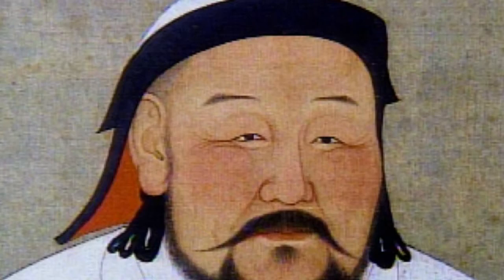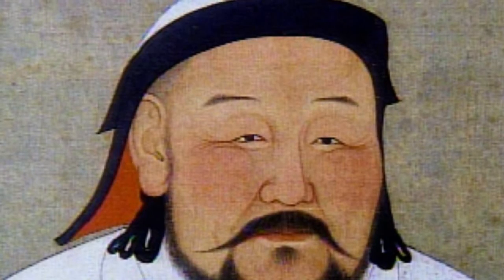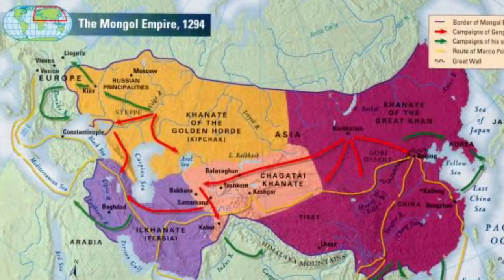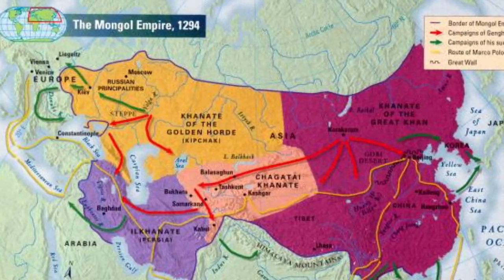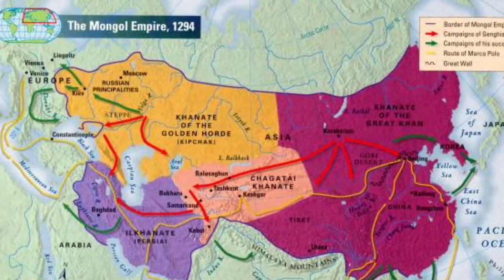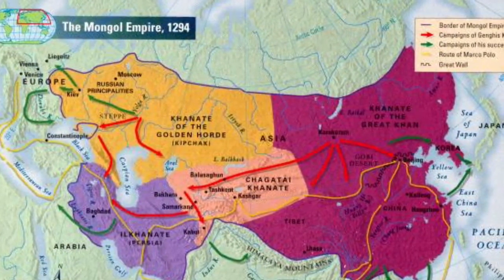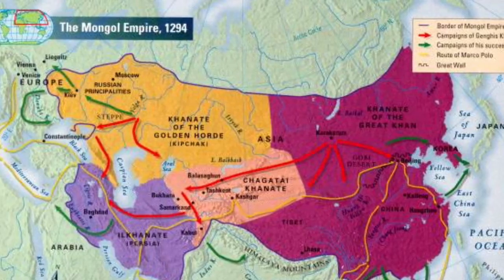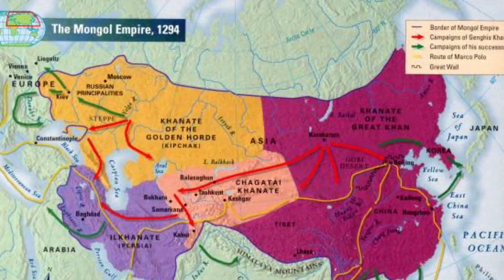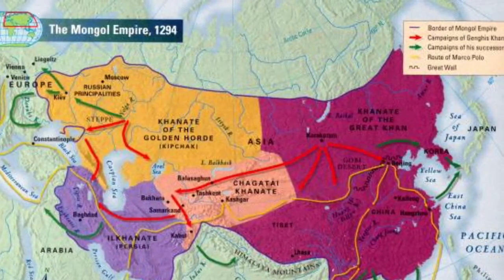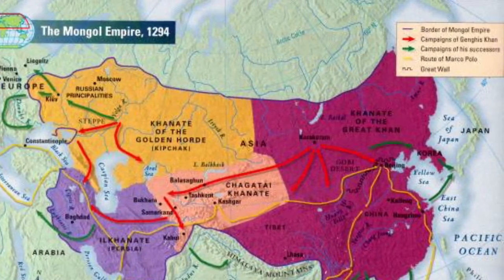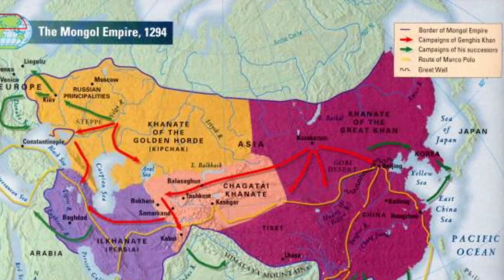The Mongol court returned to its native land. However, centuries of internal conflict, expansion, and contraction brought them to fall under the Manchu Qing dynasty. For the next 200 years, Mongolia was ruled by the Qing dynasty. Finally, Mongolia declared its independence in 1911 under the name Fong Khan.